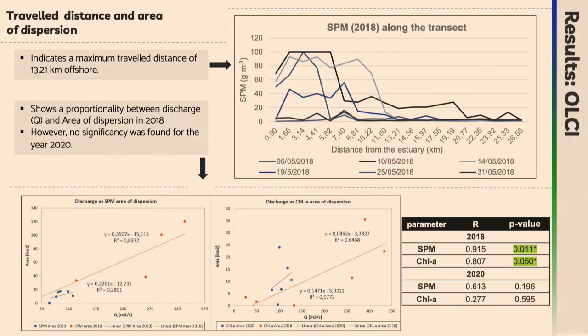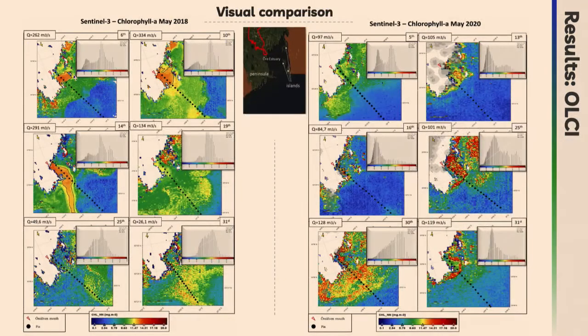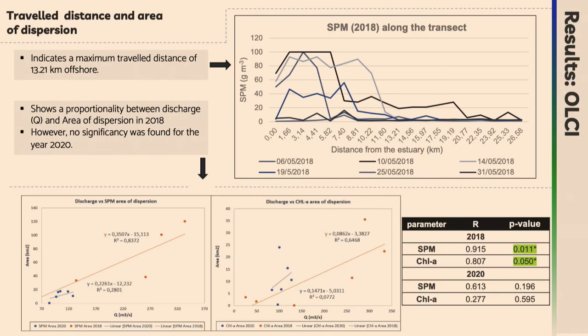Besides the visual comparison, I also wanted to go deeper statistically. I tried to understand if the particles were following a certain pattern in terms of dispersion along a transect, which you can see as the black dots on the map. I found that for both SPM 2018 and 2020, the majority of particles are concentrated within 13.21 kilometers from the coast and then decrease, probably due to differences in sea depth in that area. Chlorophyll did not show much difference or pattern, likely because phytoplankton tends to stay in the top water layers and doesn't decrease with increasing depth.